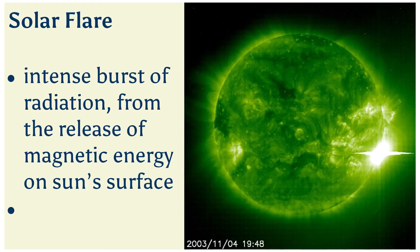Solar flares are intense bursts of radiation that come from the release of magnetic energy on the sun's surface, associated with sunspots. They are the solar system's largest explosive events, seen as bright areas on the sun, and can last from minutes to hours. We typically monitor solar flares by the photons or light they release at almost every wavelength of the spectrum, primarily in x-rays and optical light.